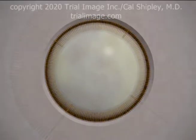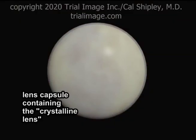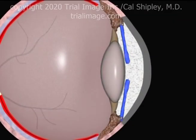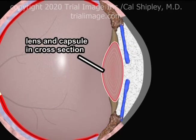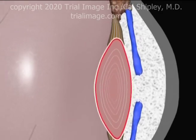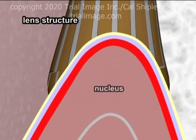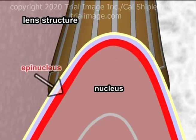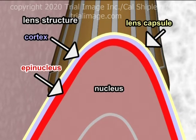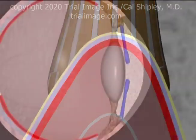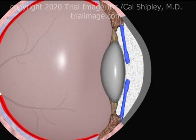Let's take a closer look now at the structure of the lens, also known as the crystalline lens. The lens is contained within the lens capsule and is a multi-layered structure. Seen in side-view cross-section, the innermost component of the lens is the nucleus. The nucleus is surrounded by two thinner outer layers, the epinucleus and the cortex. The outermost layer is the lens capsule, which is by far the thinnest of the layers, averaging just several microns in thickness.